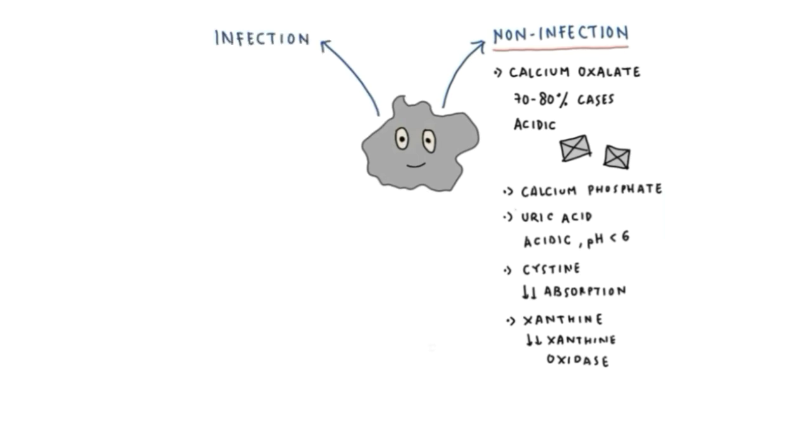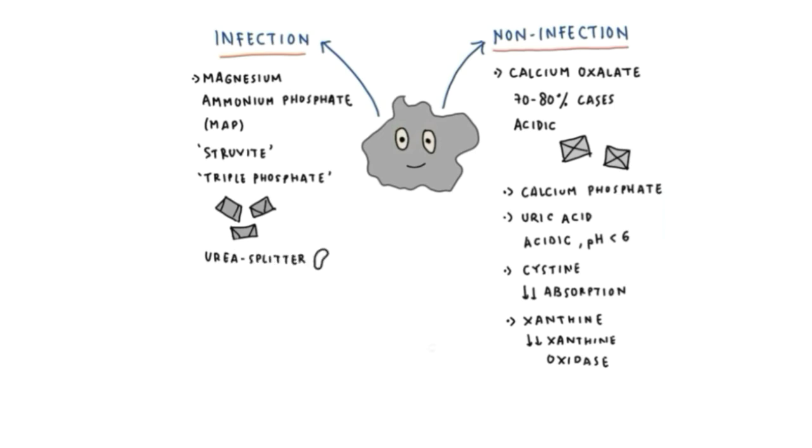The second group is infection stone: magnesium ammonium phosphate (MAP), also called struvite and triple phosphate. It looks like a coffin in stone analysis examination. It's formed by microorganisms or bacteria called urea splitters, which are Proteus species, Klebsiella, Pseudomonas. They can produce urease that generates ammonia from urea, elevating the pH of urine, producing alkaline urine.